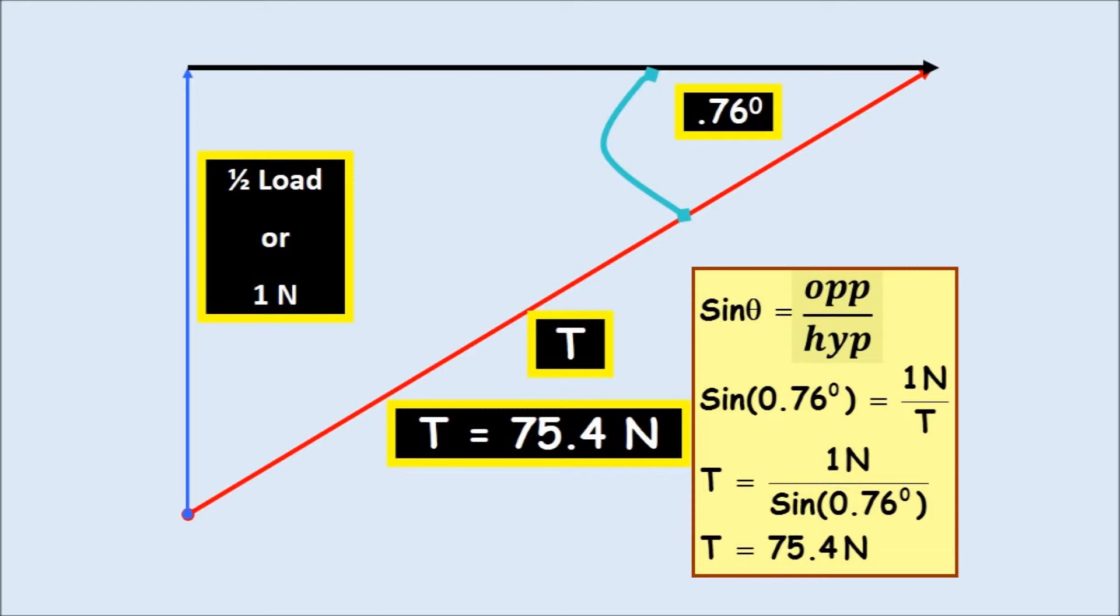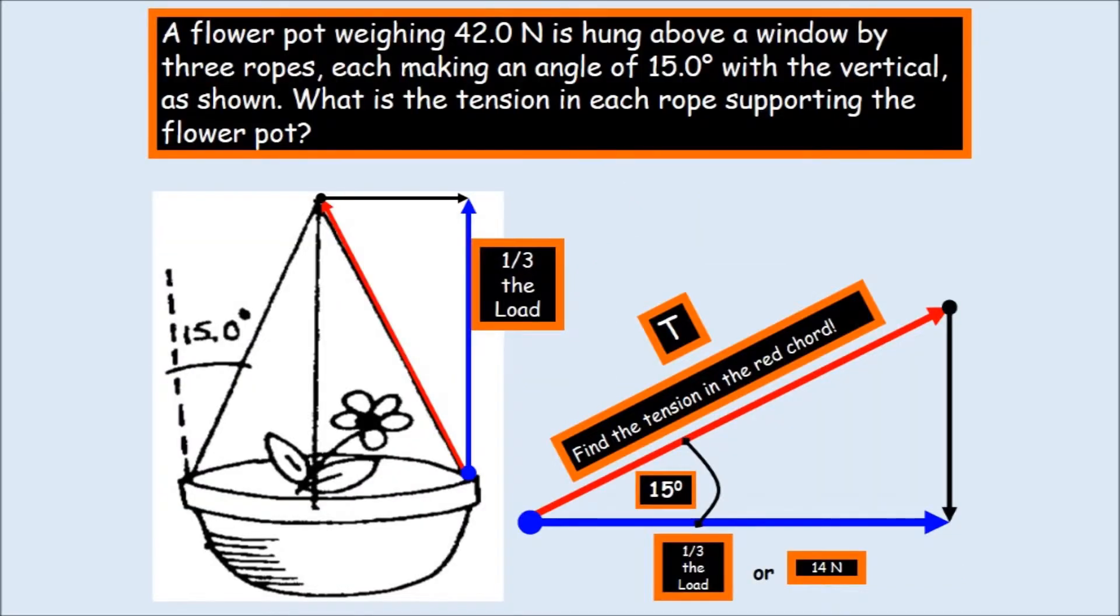And t equals 75.4 newtons. So you can see how you create this tremendous, by not putting a little bit of a sag, you know, you don't tighten the clothesline that much. Otherwise things will snap and then you'll have a real mess.